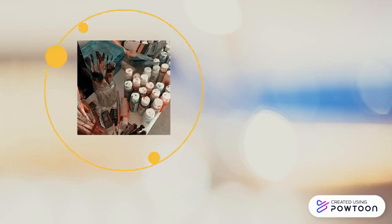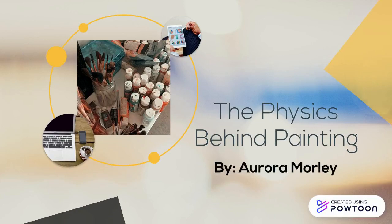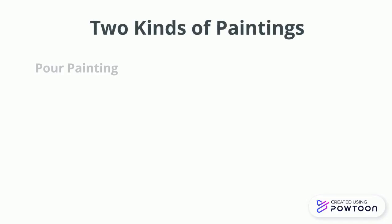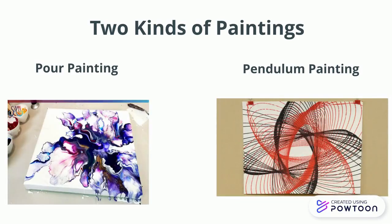Hi, my name is Aurora Morley and I'm going to be talking about the physics behind painting. Today I'm going to be talking about two kinds of painting: pour painting and pendulum painting.